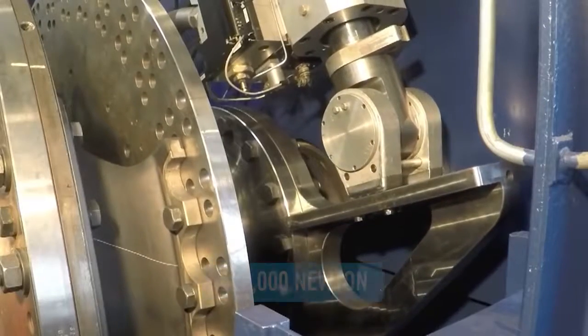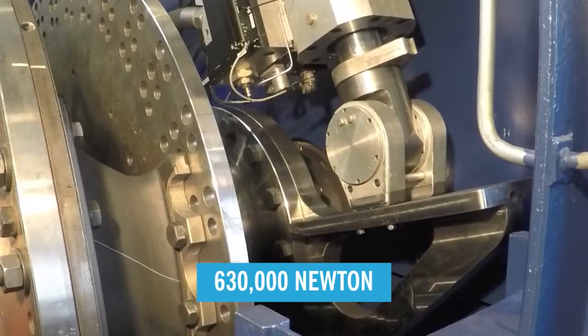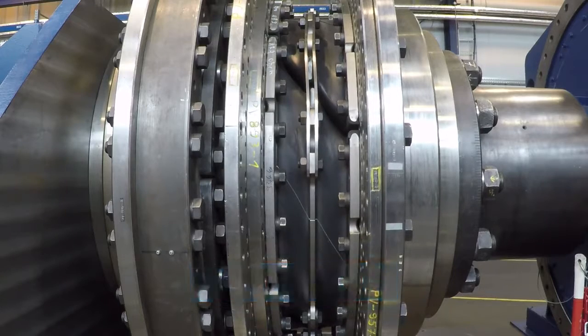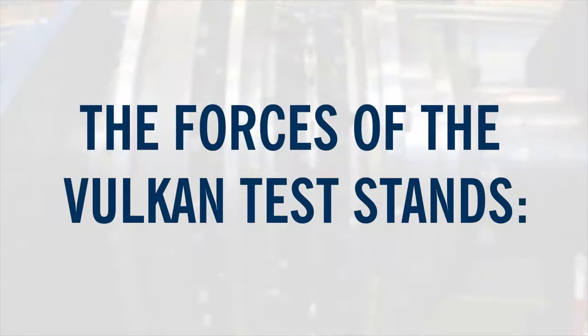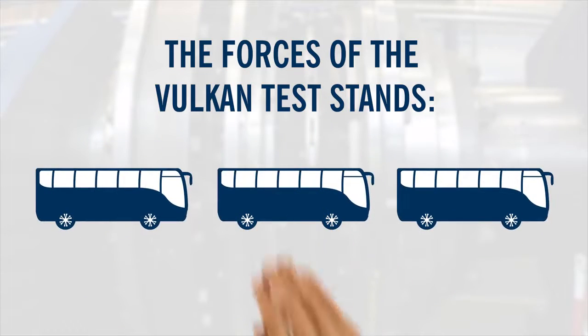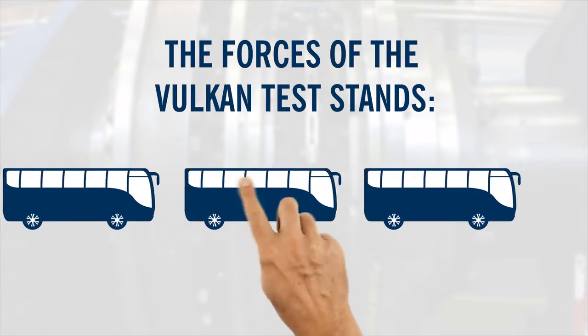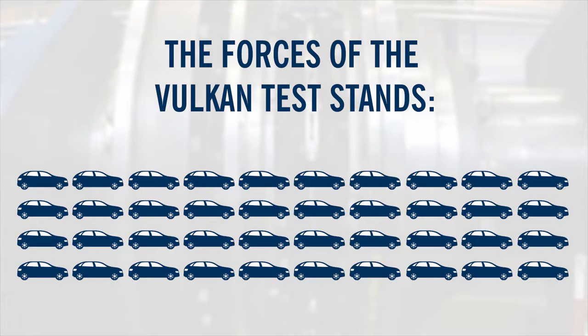The Valken Test Stands can apply forces of up to 630,000 N and torque up to 5 million Nm. This corresponds to 63 tons of weight, or 3 tour buses, or 40 VW Golfs, or a total power of 30,000 VW Golfs.